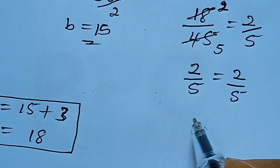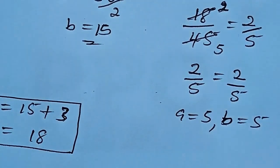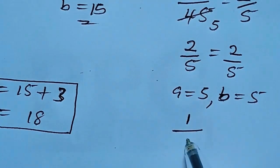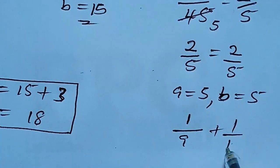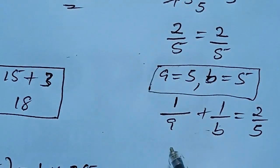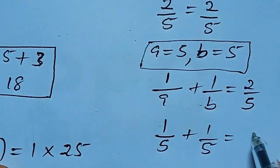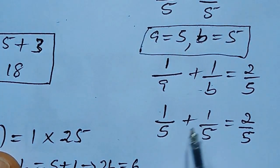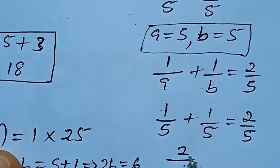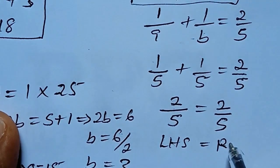For the other case where a equals 5 and b equals 5, we have 1 over 5 plus 1 over 5. Simplifying by adding the numerators, we get 2 over 5, which also equals 2 over 5. So for both cases, the left hand side equals the right hand side, confirming our solutions are correct.